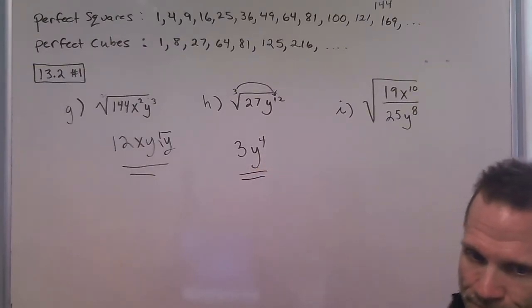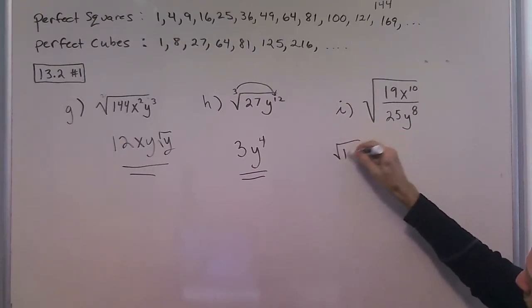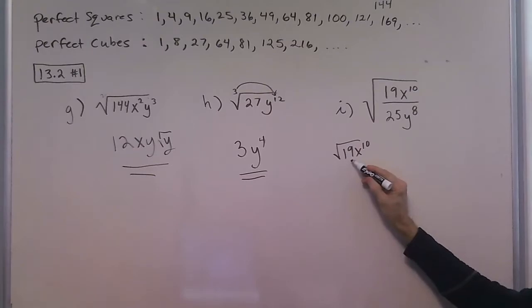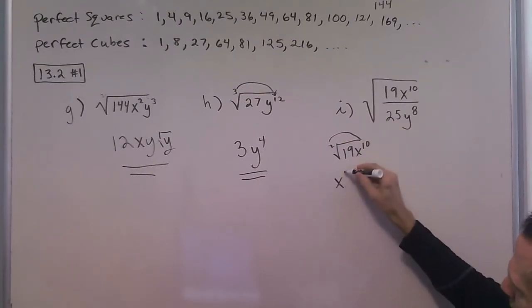Now when you see these fractions like this, you want to break this apart and do the numerator. So the numerator, when we look at it, the 19 nothing can happen with it, but we can divide 2 into 10 and we get x to the fifth comes out front. So this is what the numerator is.